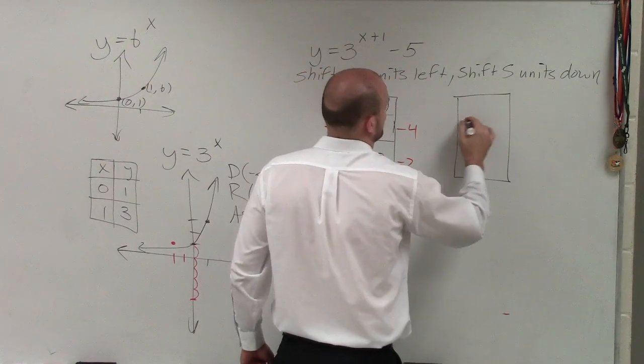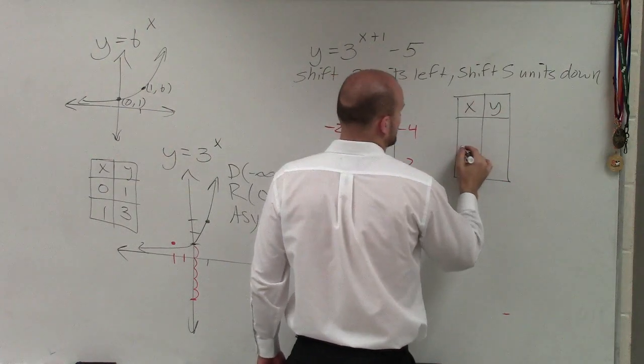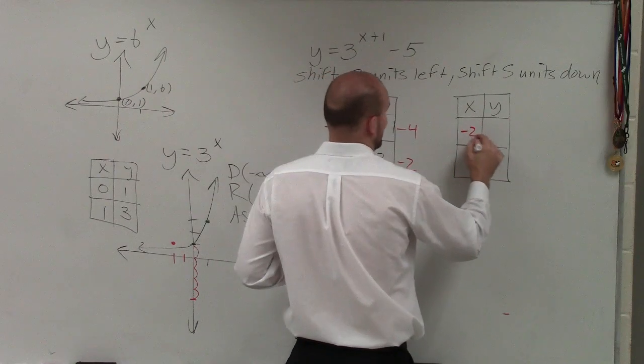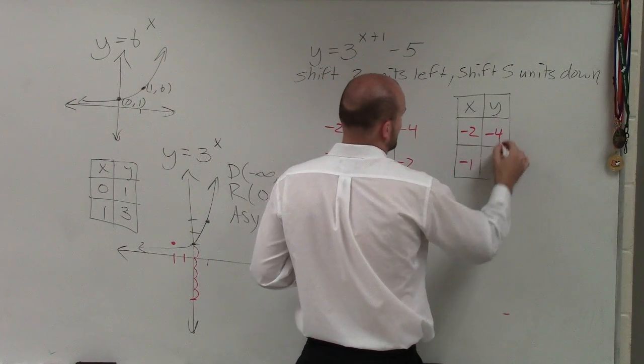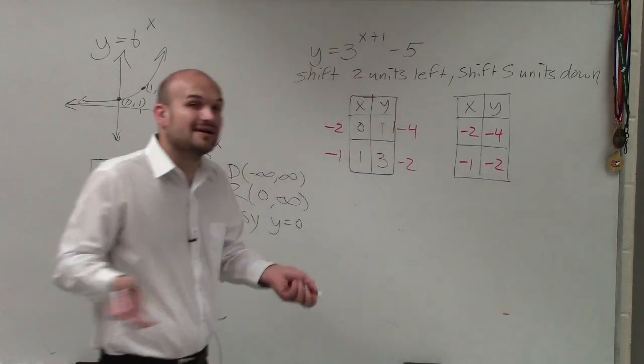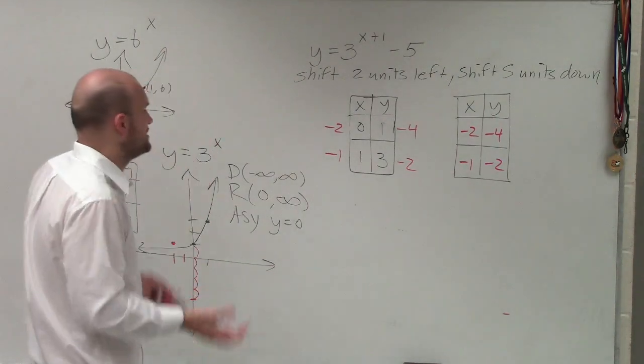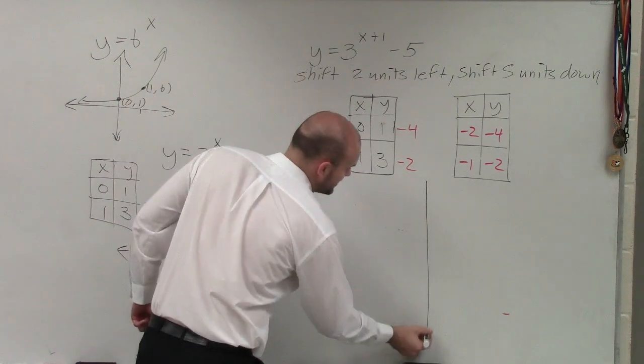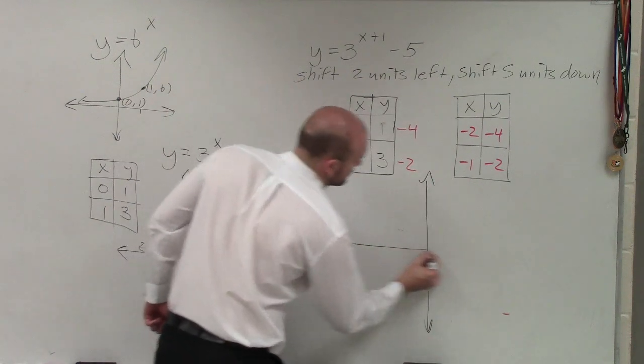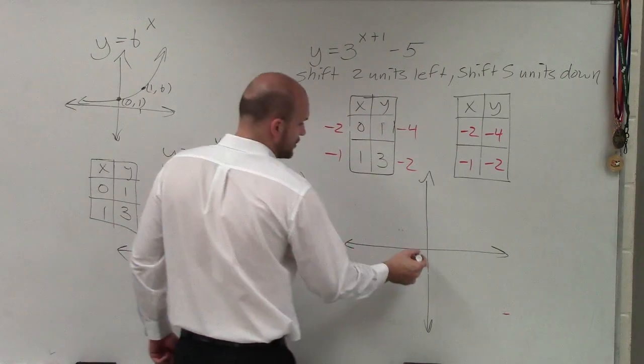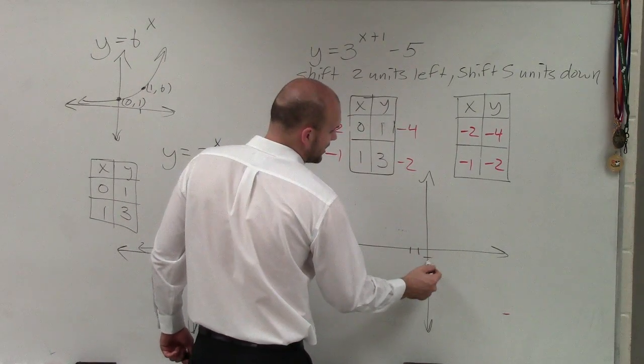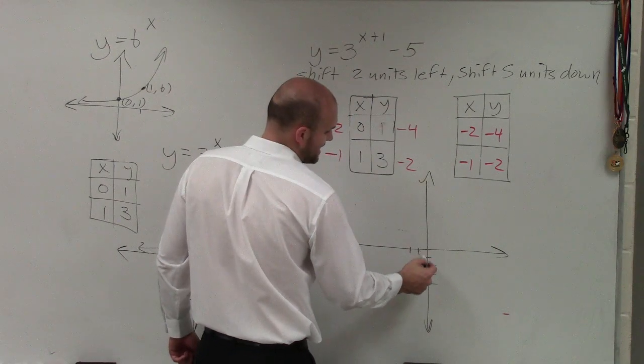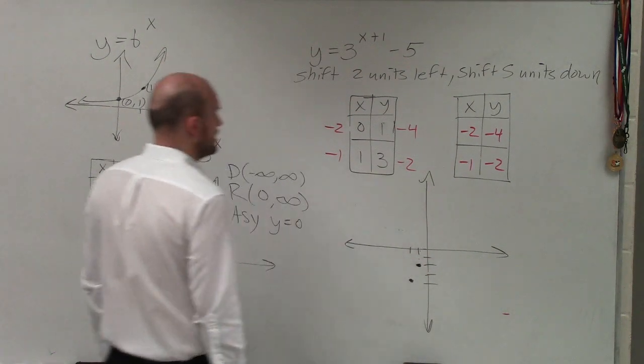Now my new table of values are now going to be negative 2, negative 4, and negative 1, negative 2. And now I can just plot those. And then I just need to determine the domain, range, and asymptote. So when graphing this here, I'll go to negative 2, down 4, and negative 1, down 2.